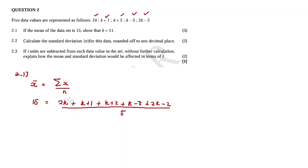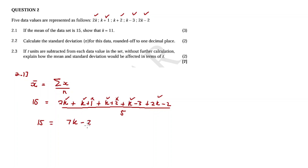In the numerator, we add all the like terms. The k values: 2 plus 1 plus 1 plus 1 plus 2 gives 7k. For the constants: plus 1, plus 2, minus 3, minus 2 gives minus 2. So the numerator simplifies to 7k minus 2, divided by 5.